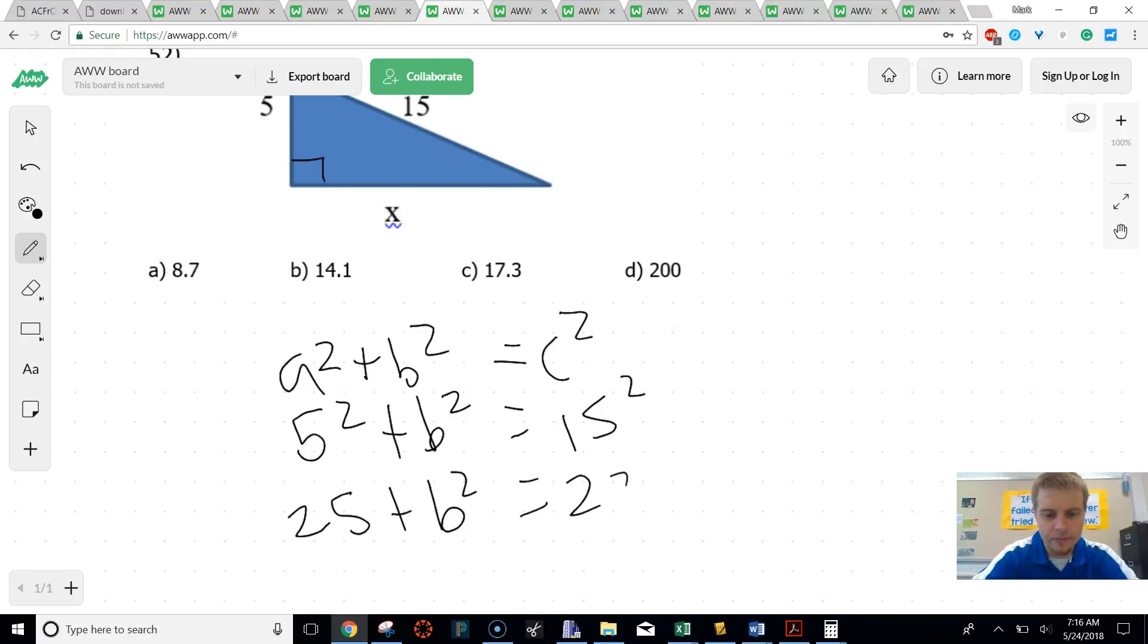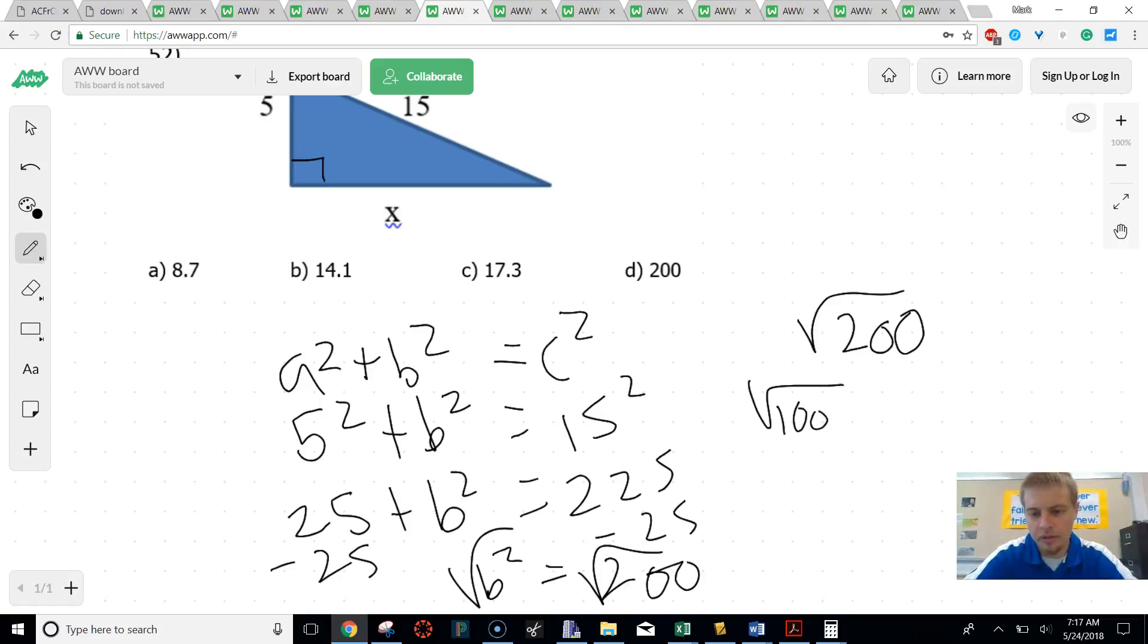And then I can subtract 25 from both sides, and I can get b squared is equal to 200. And then we can square root and figure out what that answer would be as a decimal. Before we square root, I'm going to put that in simplest radical form, just for a little bit of extra practice. The square root of 200 can be broken down into 10 times 2, which would be 10 radical 2. And that would be it in simplest radical form.